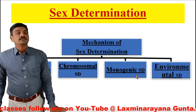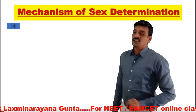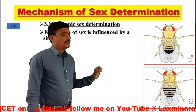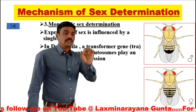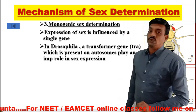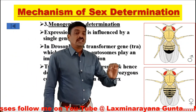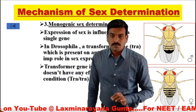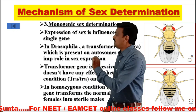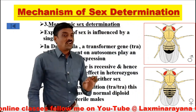The next mechanism is monogenic sex determination. Mono means single — a single gene is responsible for the determination of sex. In Drosophila, a single transformer gene, the TRA gene, which is present on autosomes, plays an important role in sex expression. The TRA gene is recessive, so if it is heterozygous, it won't affect sex. But if it is in the homozygous state — that is, tra/tra — this gene transforms a normal diploid female into a sterile male. This is called monogenic sex determination.